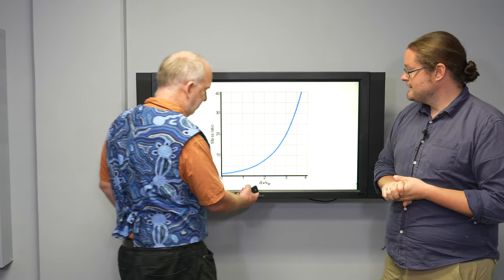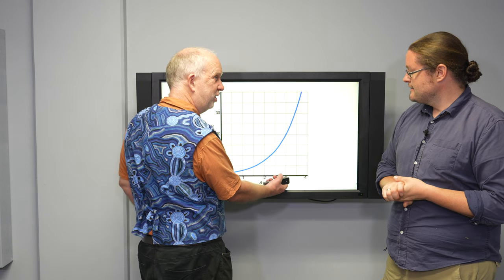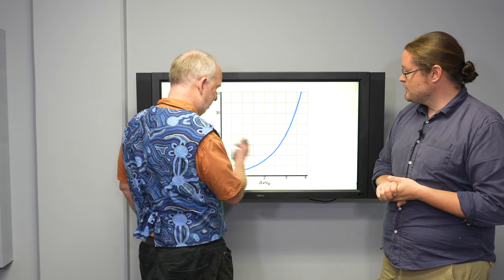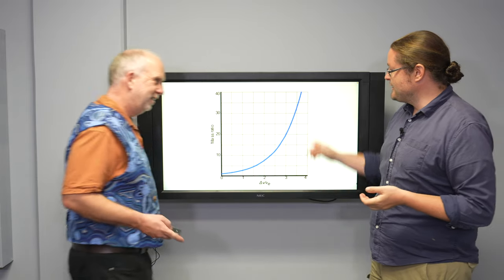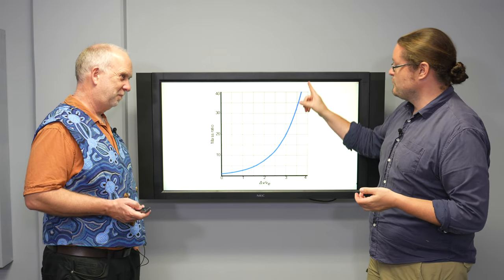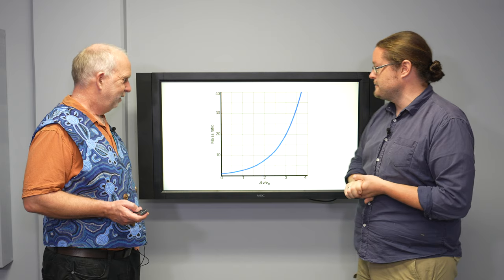Okay, remember the graph. So previously we had delta V of about three to one for low Earth orbit, which ran across to about 20. Now we're up at nearly four, which means over 40. So it's really starting to get into that really exponential climb on this curve.